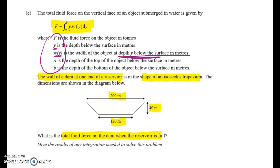A is the depth of the top of the object below the surface in metres. So we know that when we're at the top of the object, it's full. So A is going to be 0, and B is the depth at the bottom of the object below the surface in metres. So B is going to be 40.